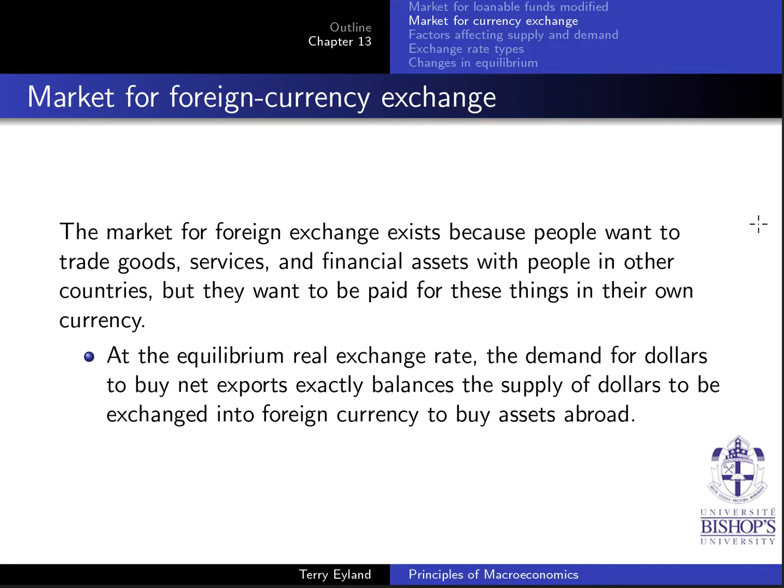So at the equilibrium real exchange rate, the demand for dollars to buy net exports exactly balances the supply of dollars to be exchanged into foreign currency to buy assets abroad. That's the way that they kind of represented it. My way is just a little bit different.